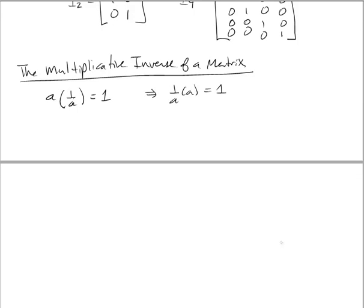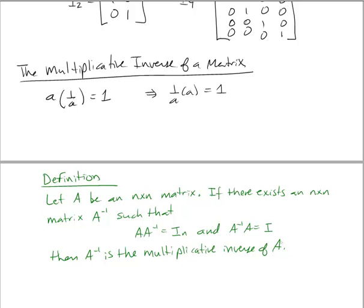The definition: let A be an n-by-n matrix. If there exists another n-by-n matrix A⁻¹ such that A × A⁻¹ = Iₙ and also A⁻¹ × A = Iₙ, then A⁻¹ is the multiplicative inverse of A. You must show both directions because matrix multiplication is not commutative — AB does not automatically equal BA.